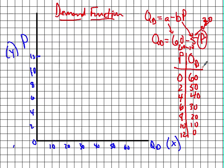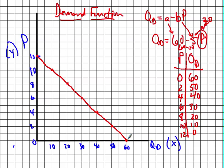This table of prices and quantities is also called a demand schedule. Now we want to plot the curve. At a price of zero, 60 would be demanded. At $2, 50. At $4, 40. At $6, 30. At $8, 20. At $10, 10. And at $12, zero. So whatever this product is, if the price went up to $12, nobody would want it. If it were free, 60 people would want it — or they would demand 60 of them.